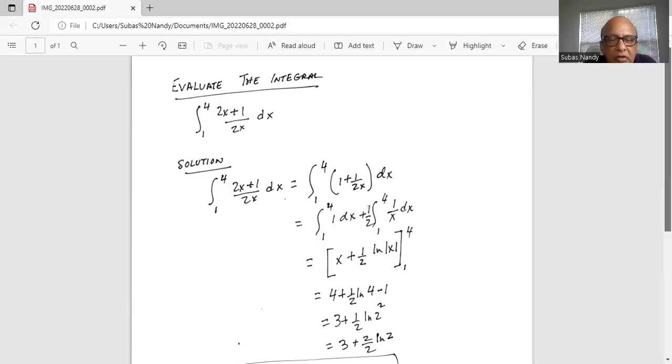That is integration from 1 to 4 of 1 dx plus half integration from 1 to 4 of 1 over x dx.